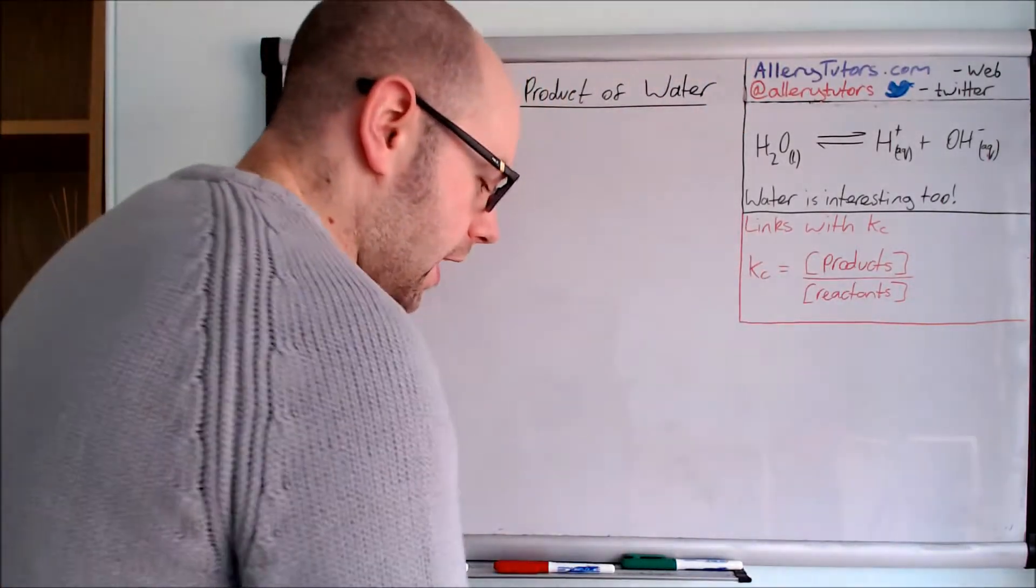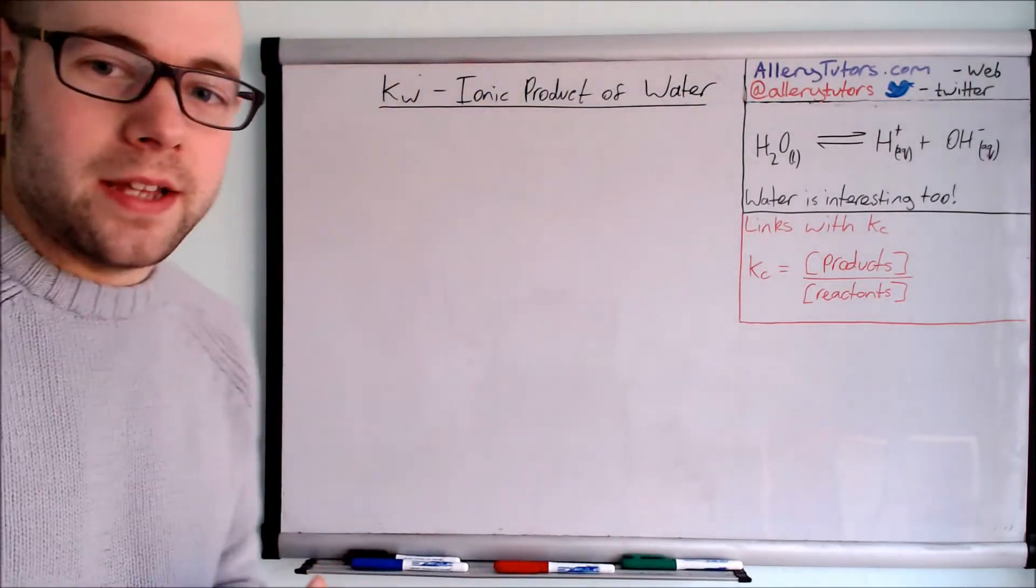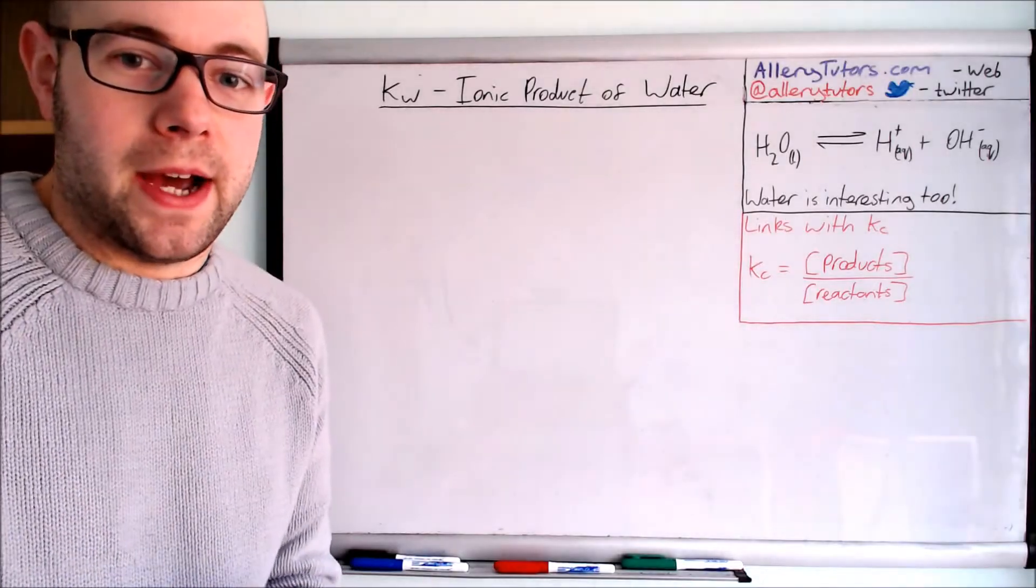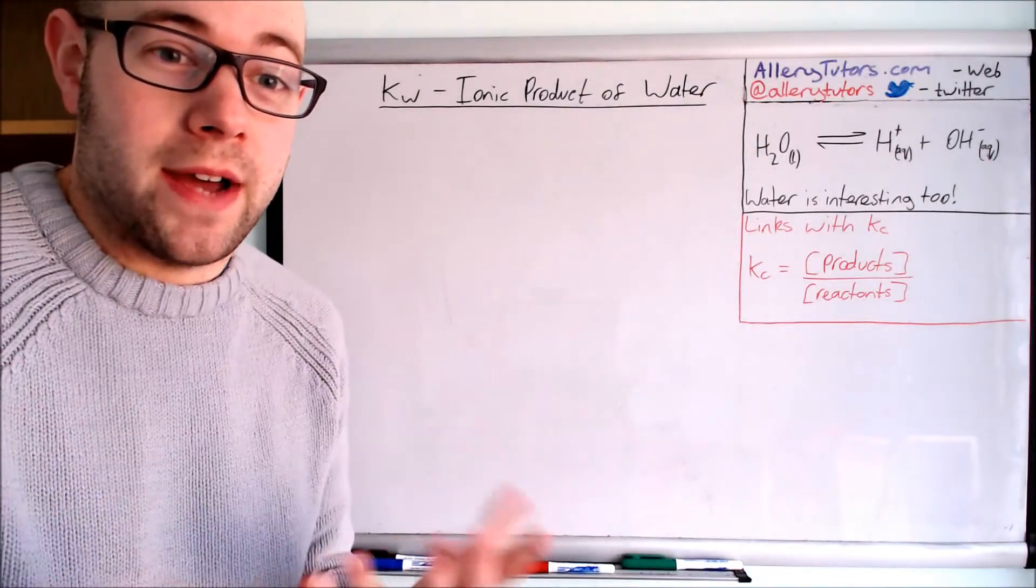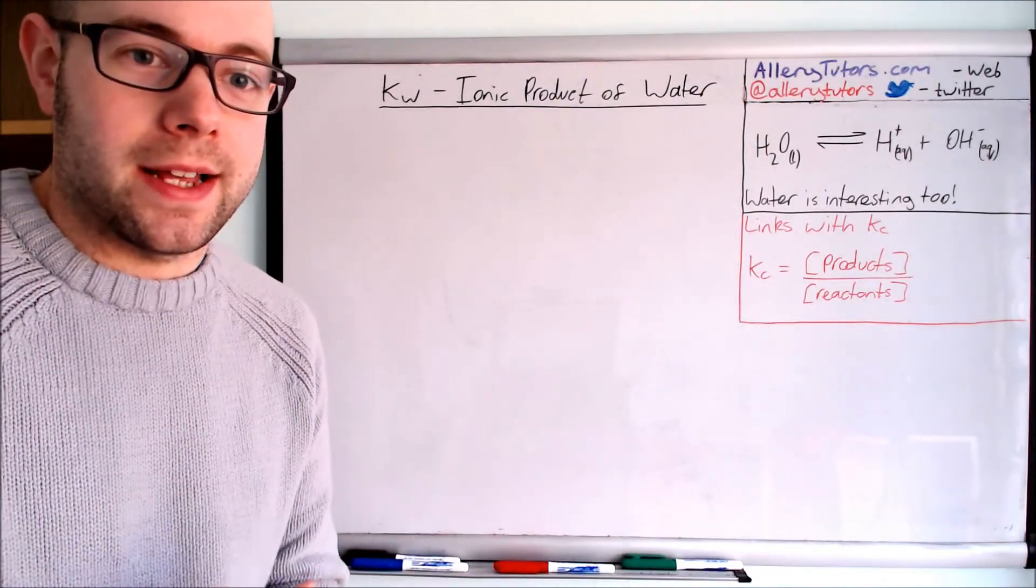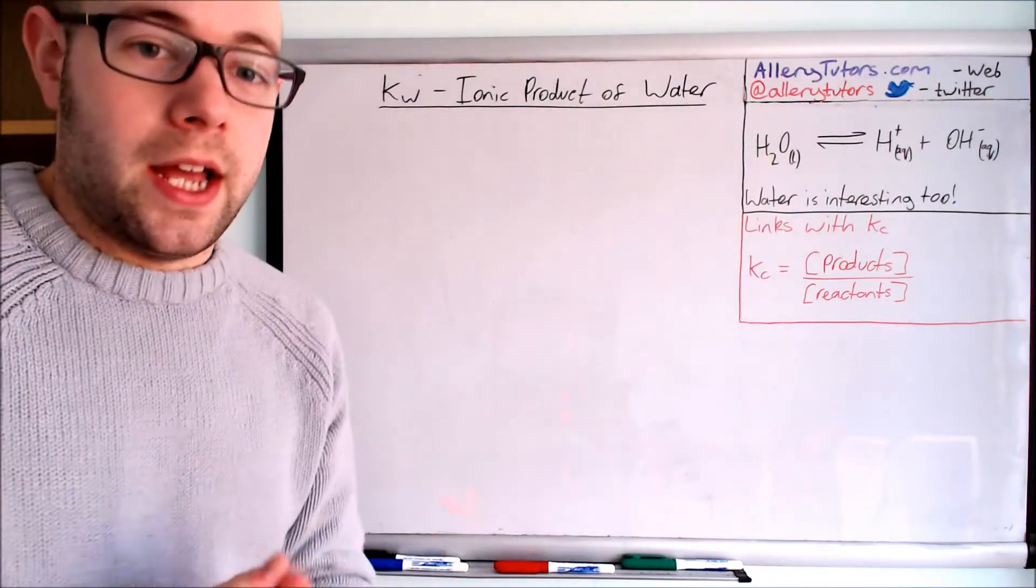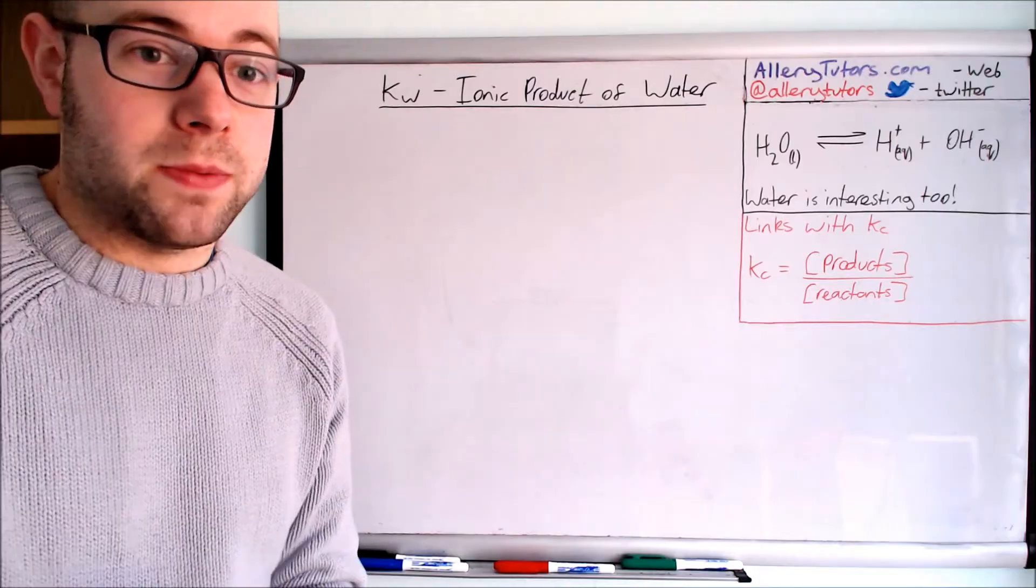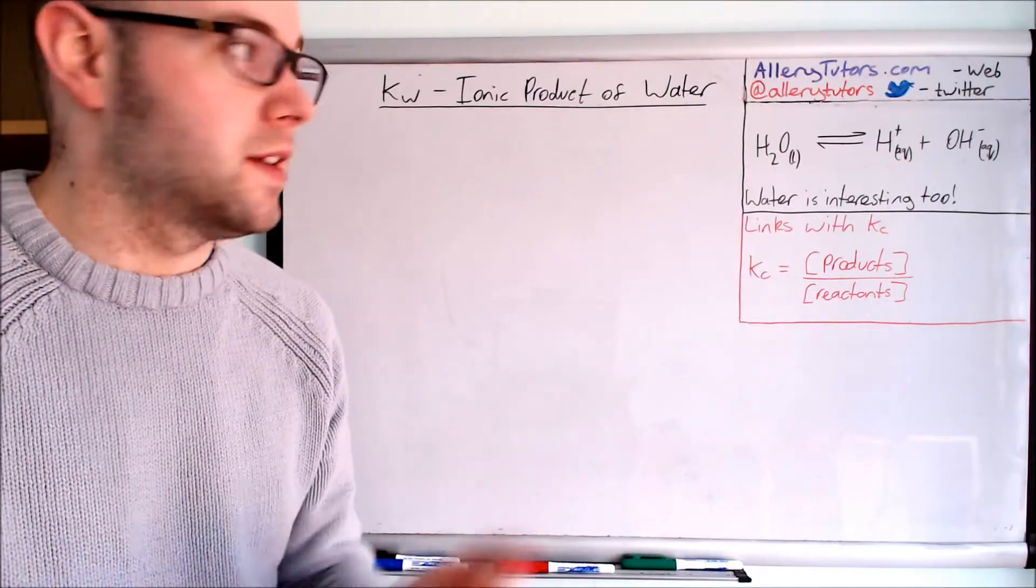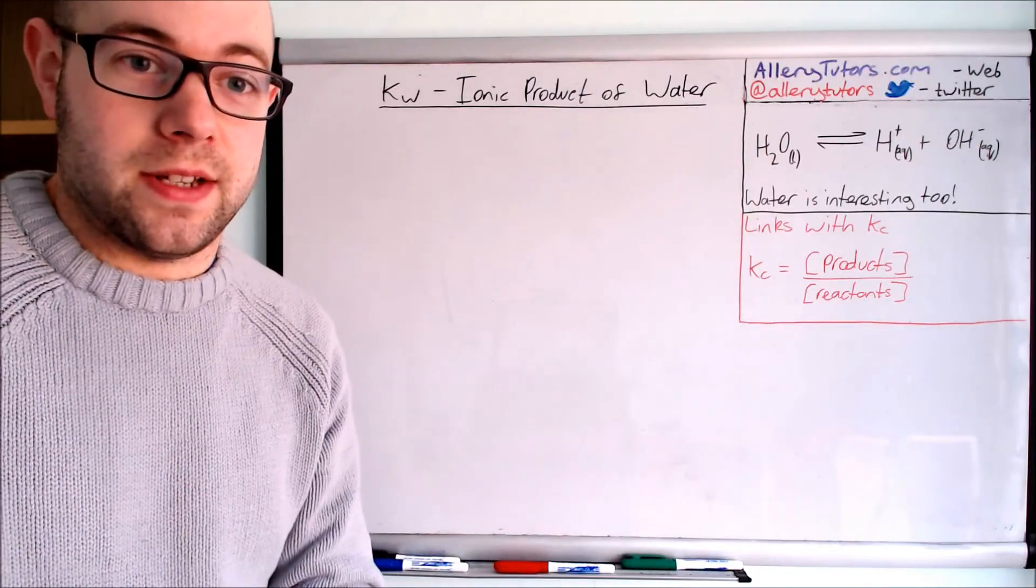Kw is the ionic product of water, and we're going to show you how we derive it. Water actually dissociates into an H plus ion and an OH minus ion, as shown on this equation here.